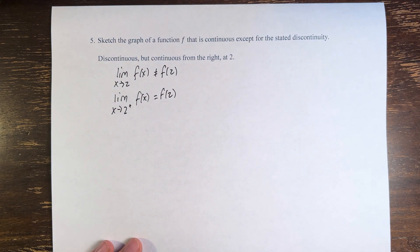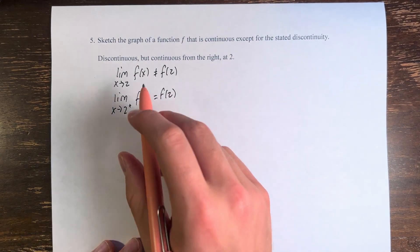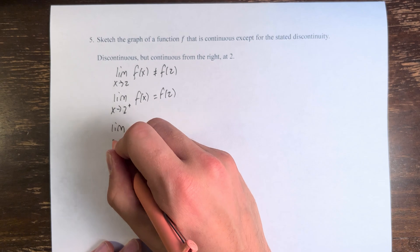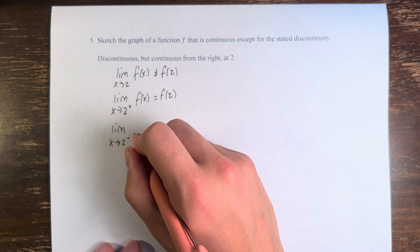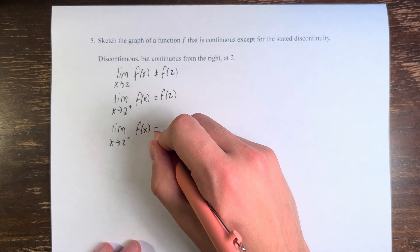And this necessarily means, right, if it's continuous from the right but it's discontinuous, that means it's not continuous from the left. The limit as x approaches 2 from the left is not equal to f of 2.